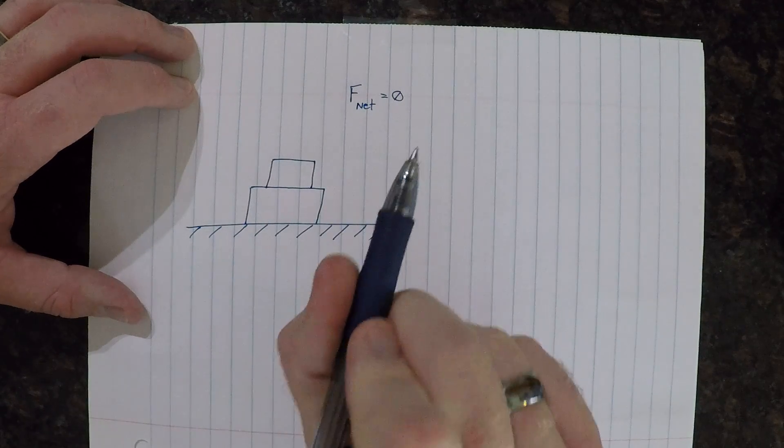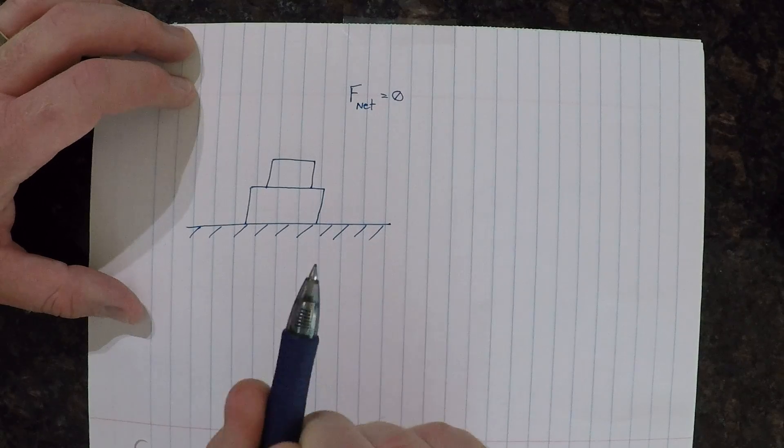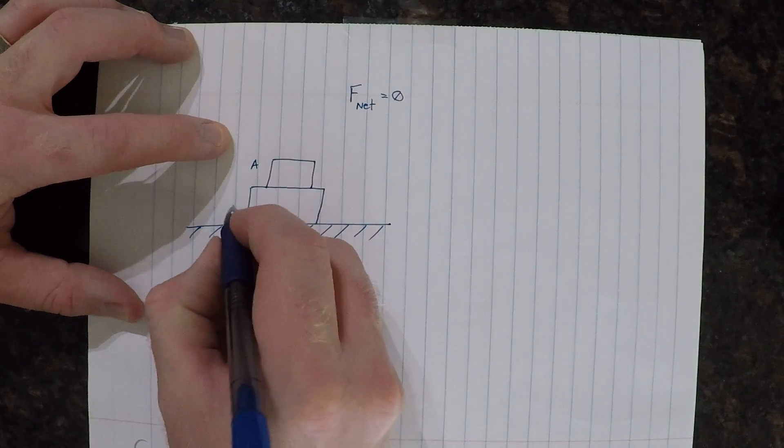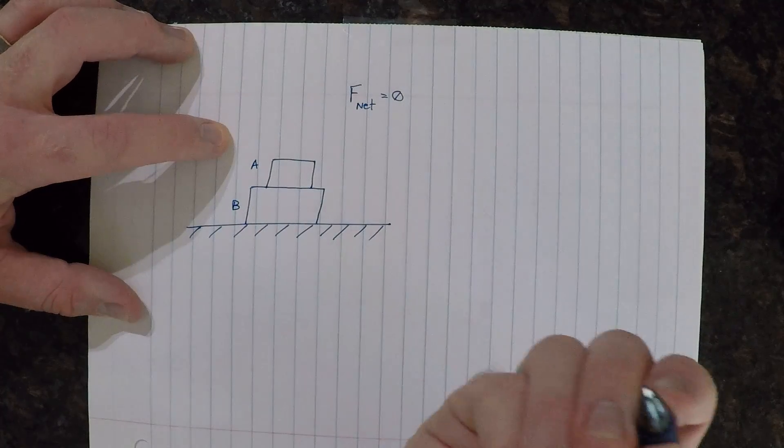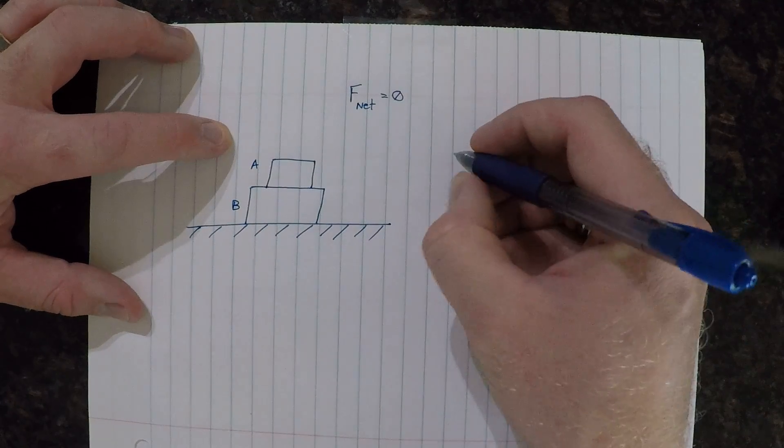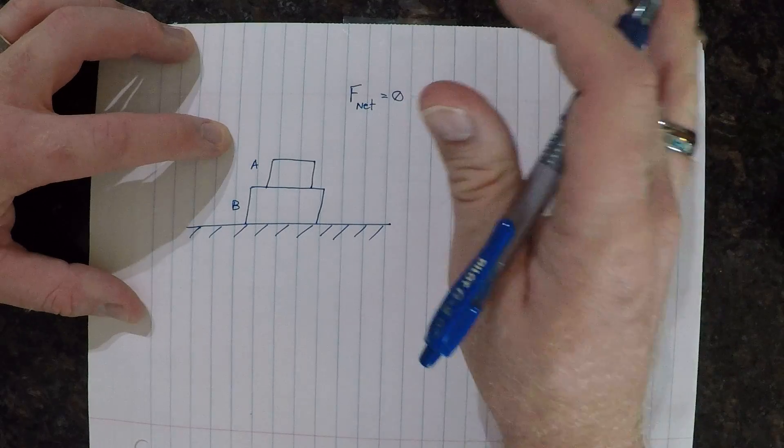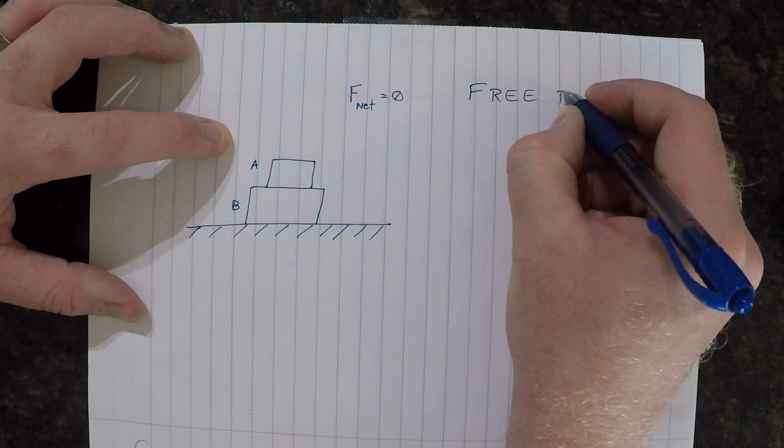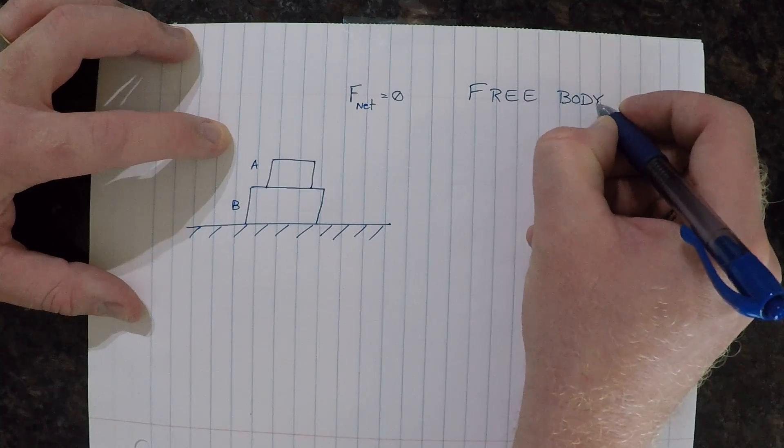We need to write two free body diagrams for each of these objects. And I'll call this object A, and I'll call this object B. Box A, box B. So let's draw a free body diagram for each of these boxes.